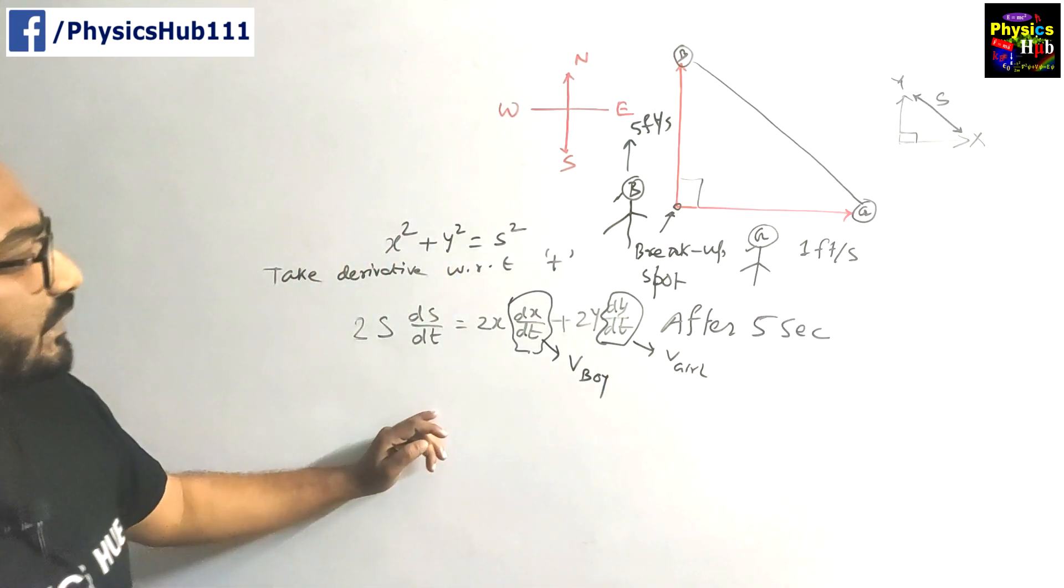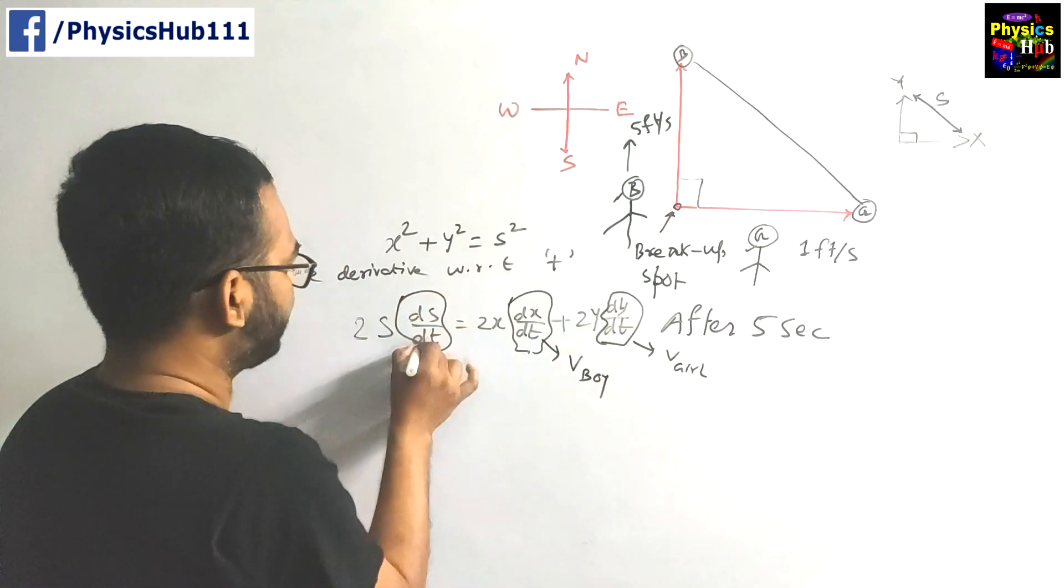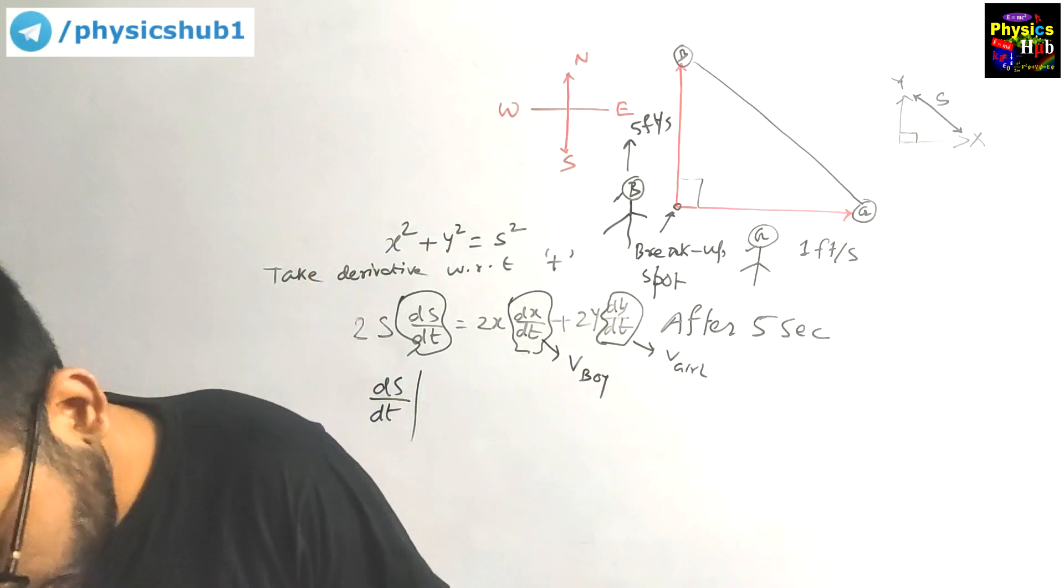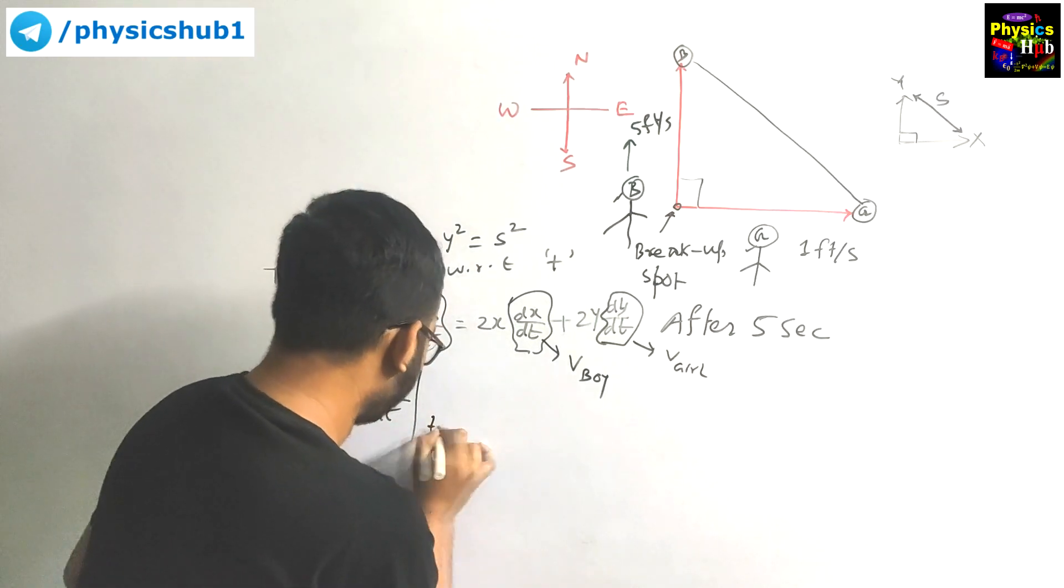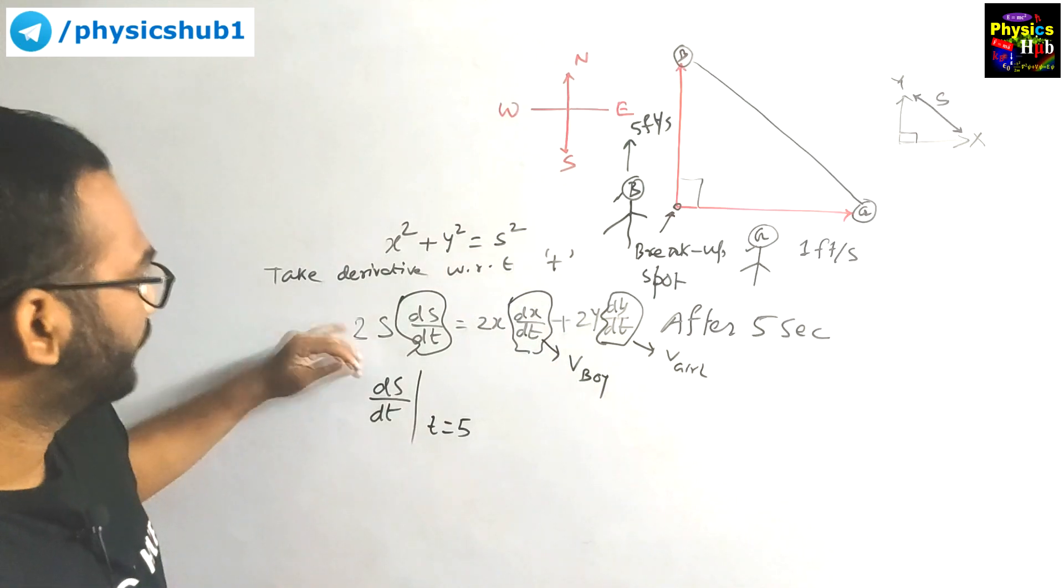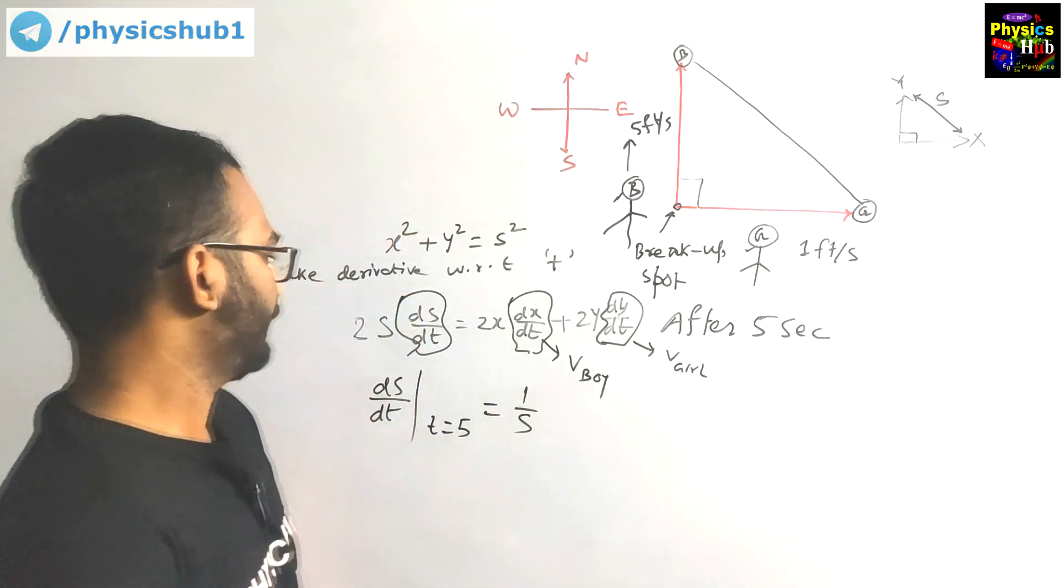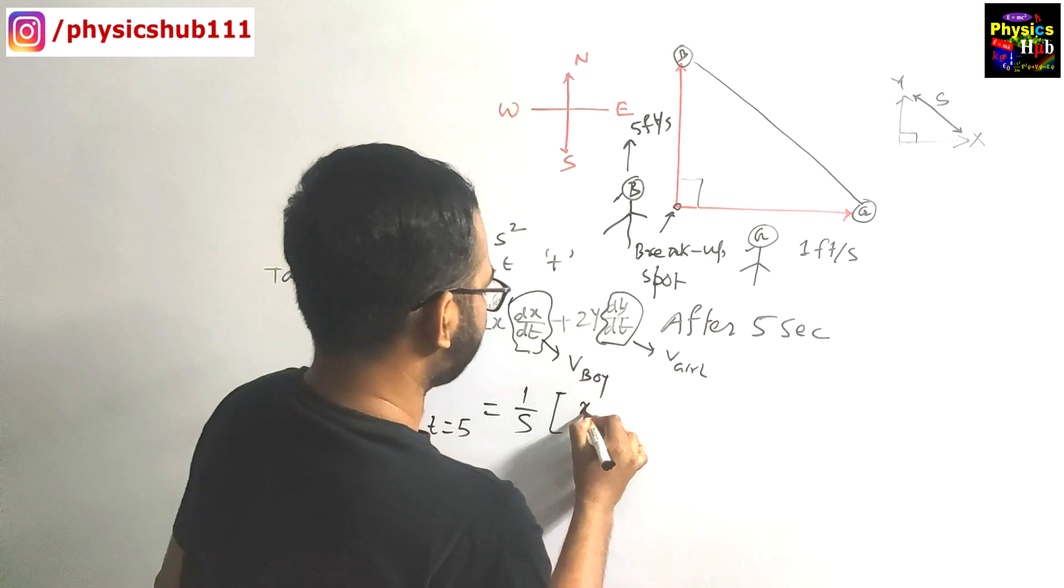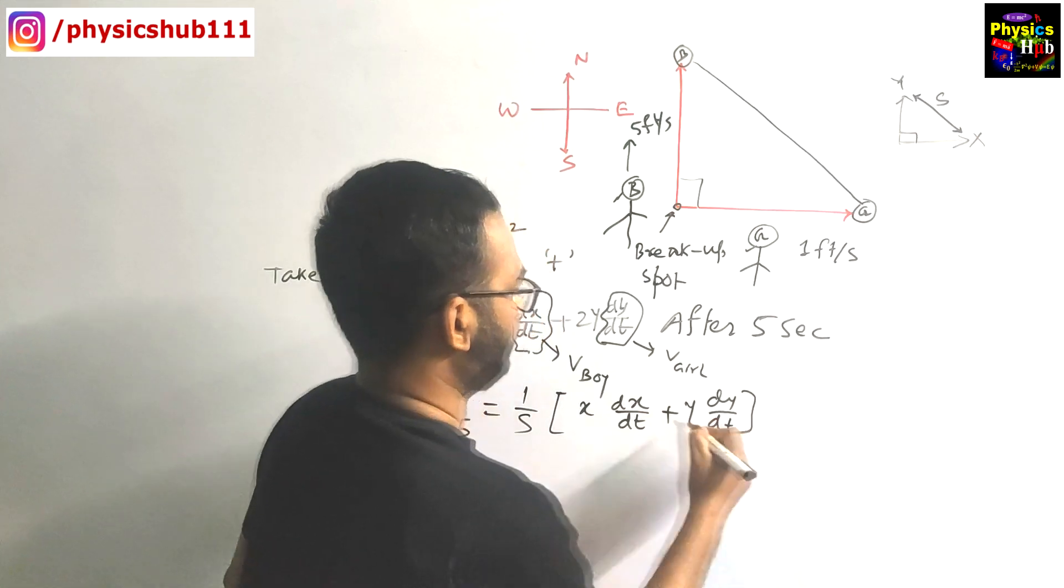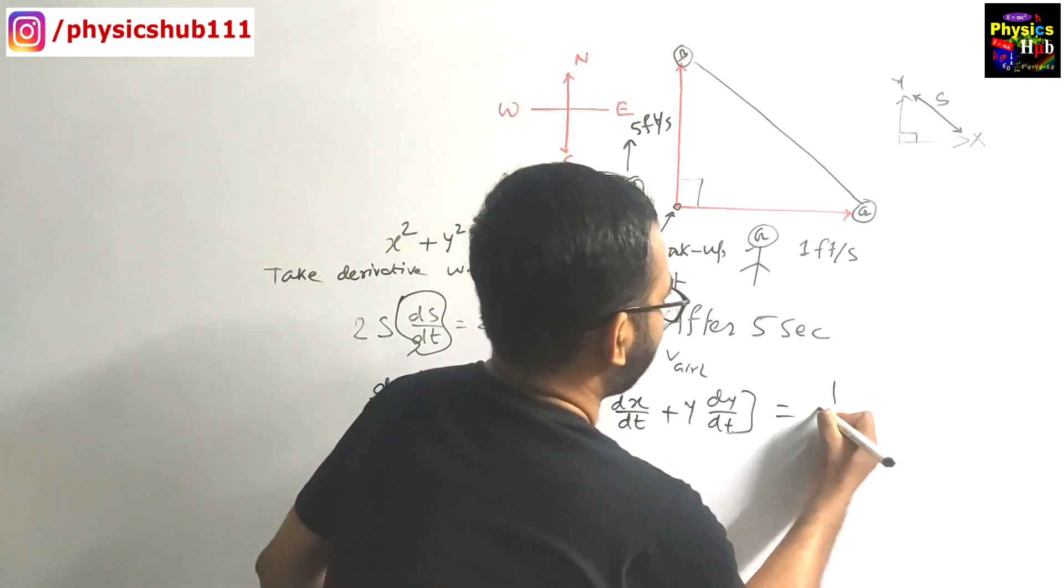These velocities are given to you: this is 5 feet per second, this is 1 foot per second. They have asked you to find ds/dt when the time is 5 seconds after. So basically you have to find ds/dt at t = 5. You can omit 2 from everywhere and we can write it as ds/dt = (1/s)·(x·dx/dt + y·dy/dt). What is s?